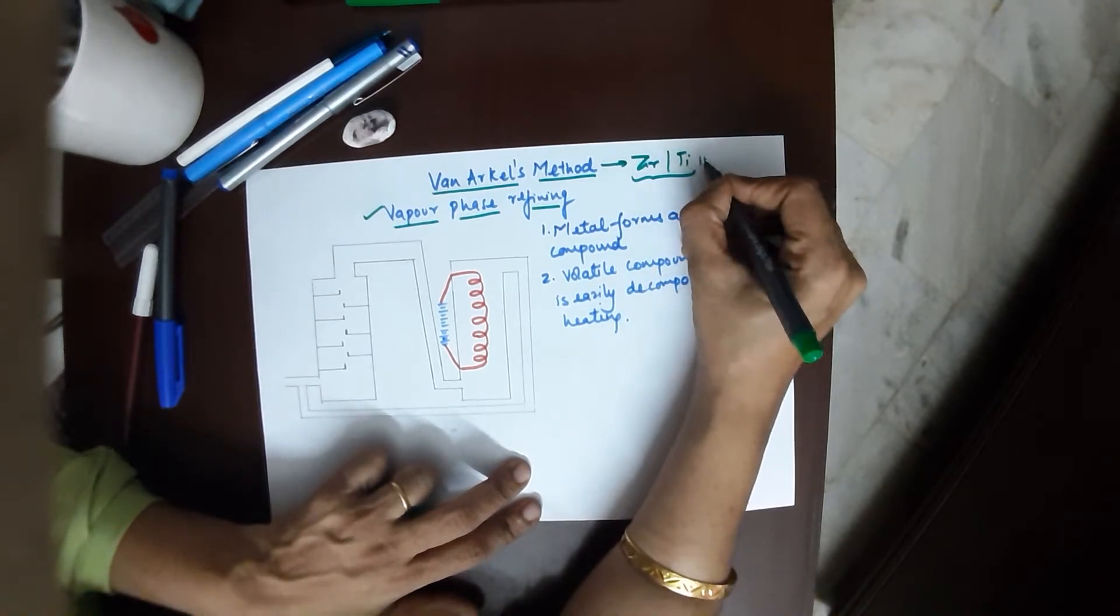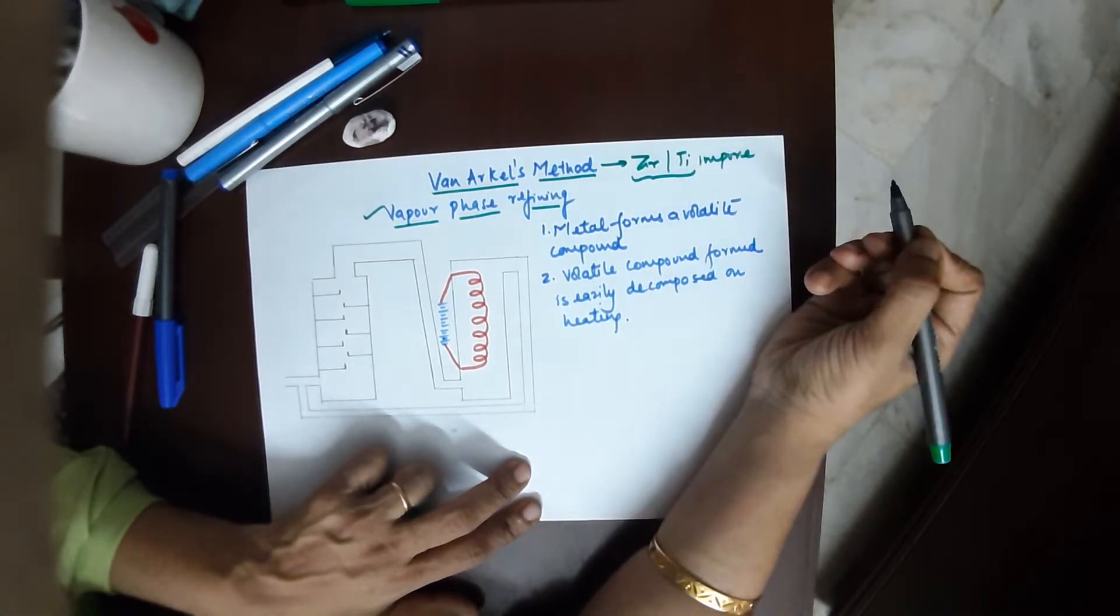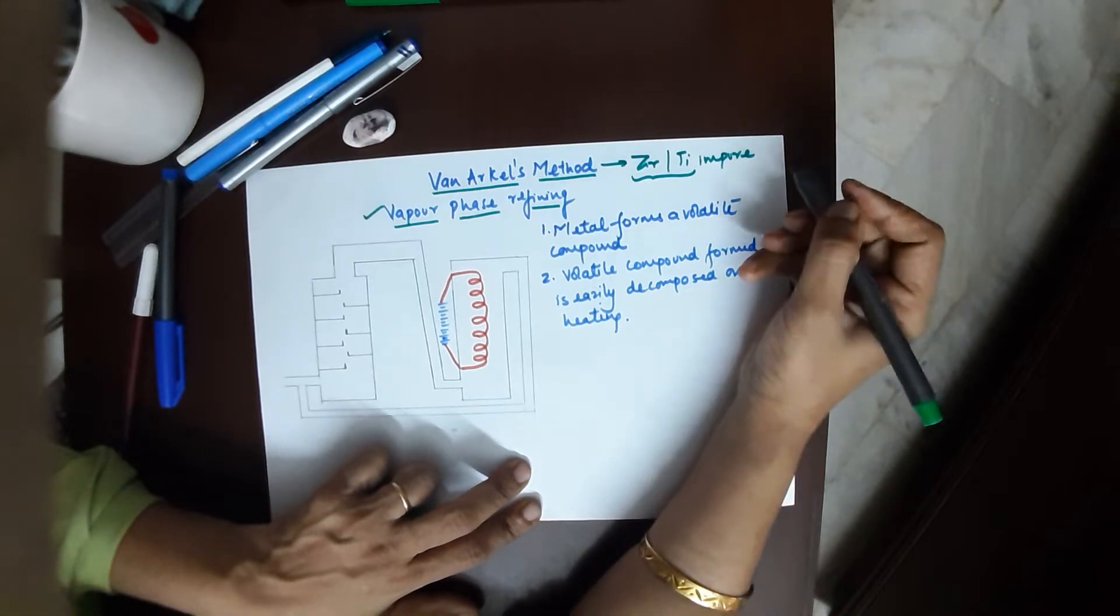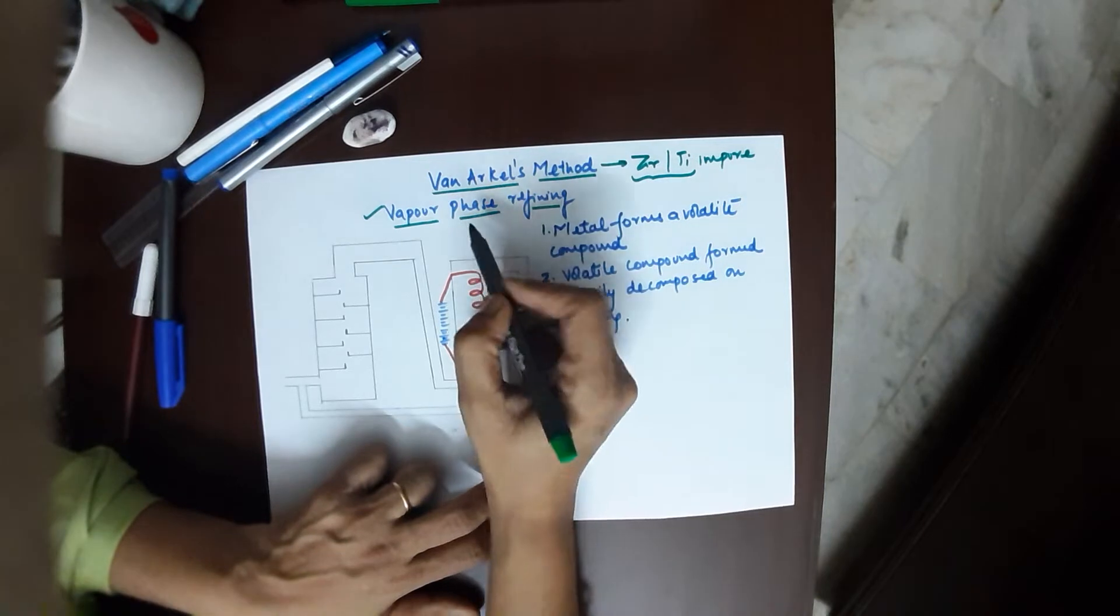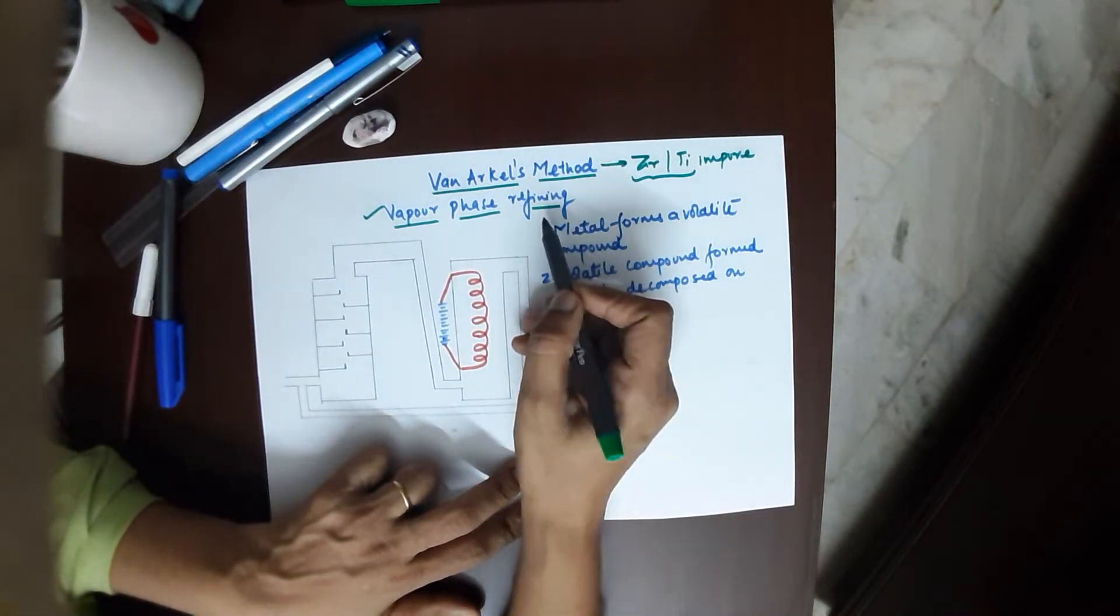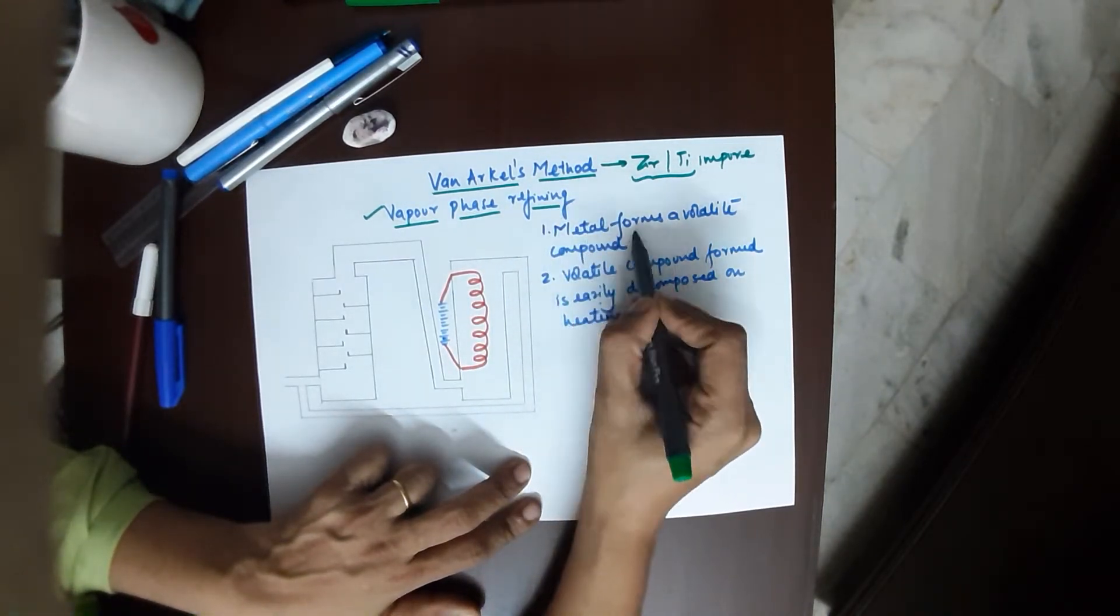If you have impure zirconium and titanium and you want to purify it, this is the method used. The agenda for vapor phase refining, as done in Mond's process, is your metal has to form a volatile compound with a suitable reagent.